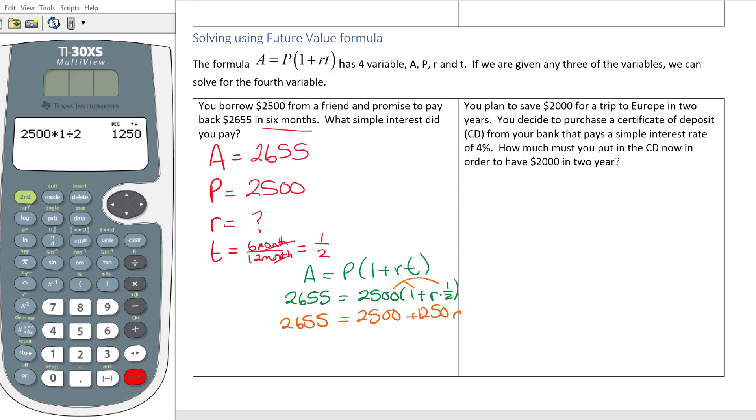Now I'm going to solve. I subtract 2500 from both sides. 2655 minus 2500 is 155. And then the last step to get R all by itself I'm going to divide both sides by 1250.